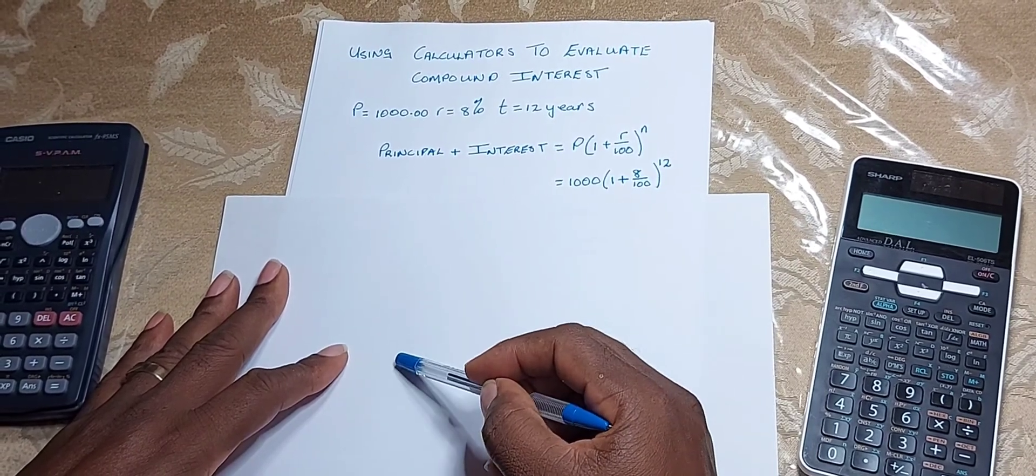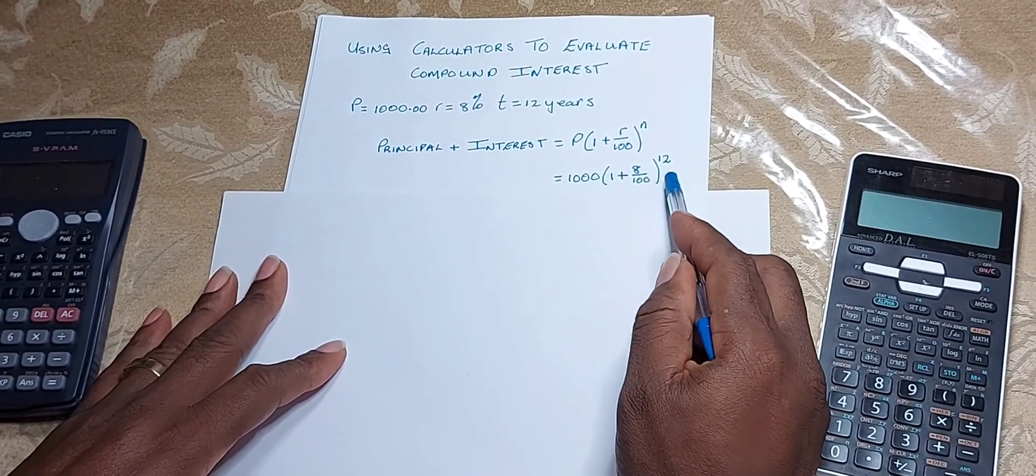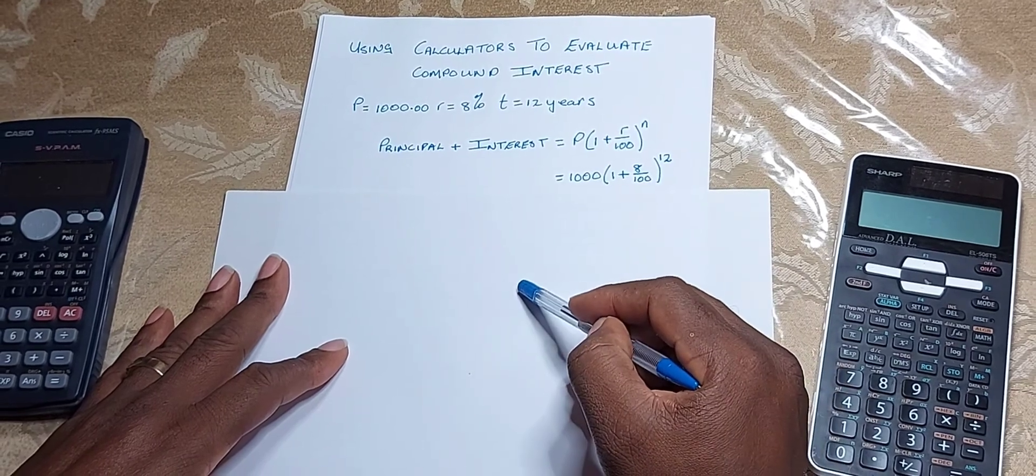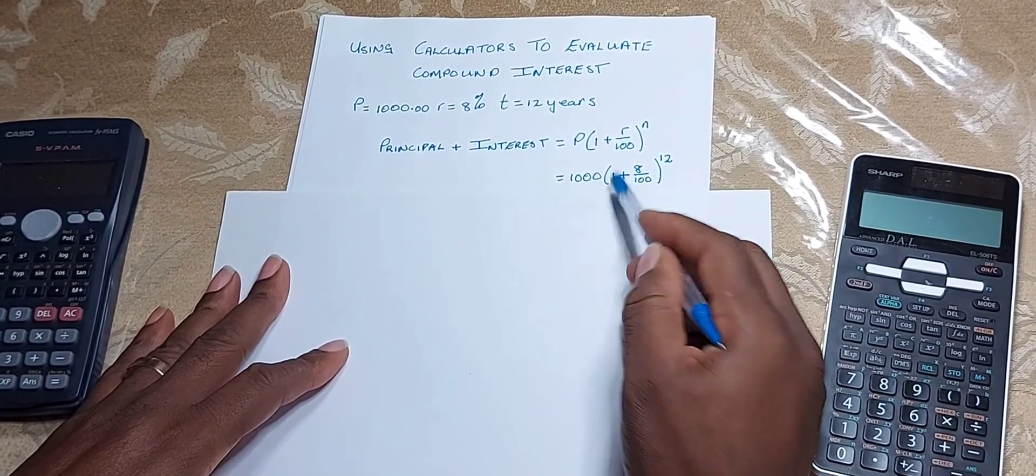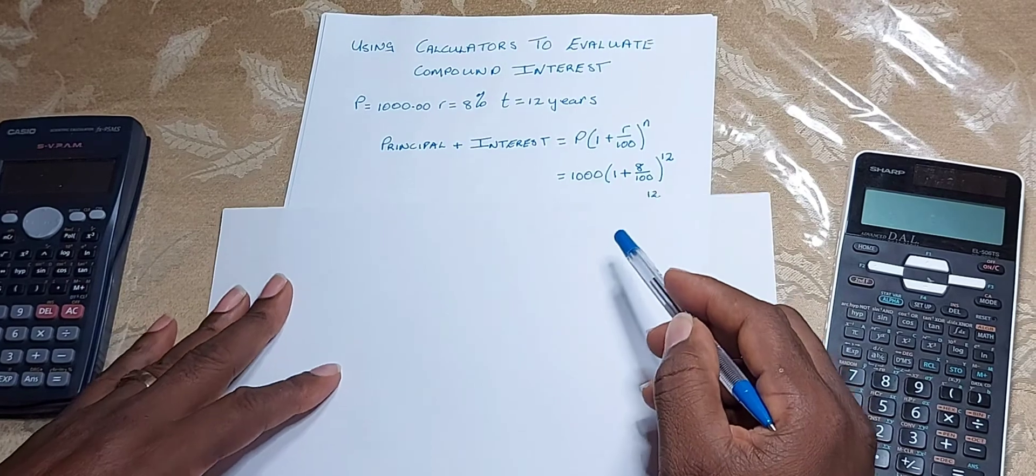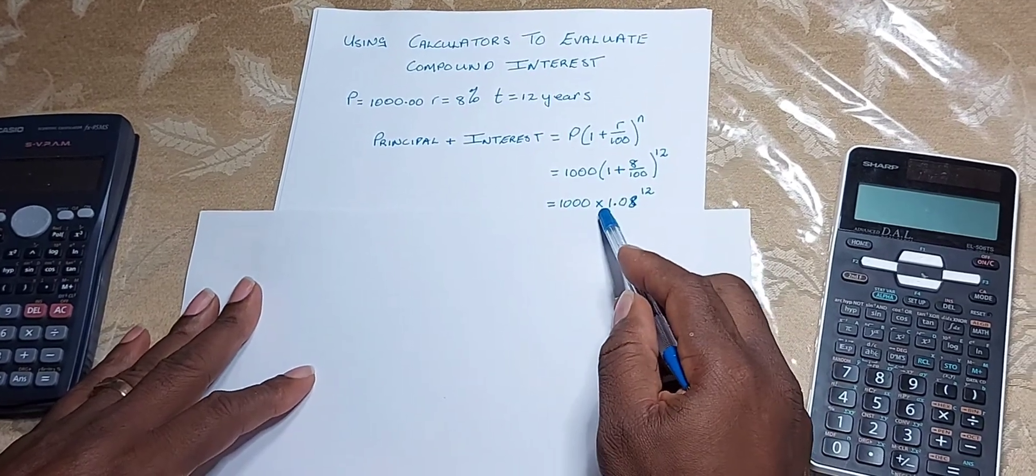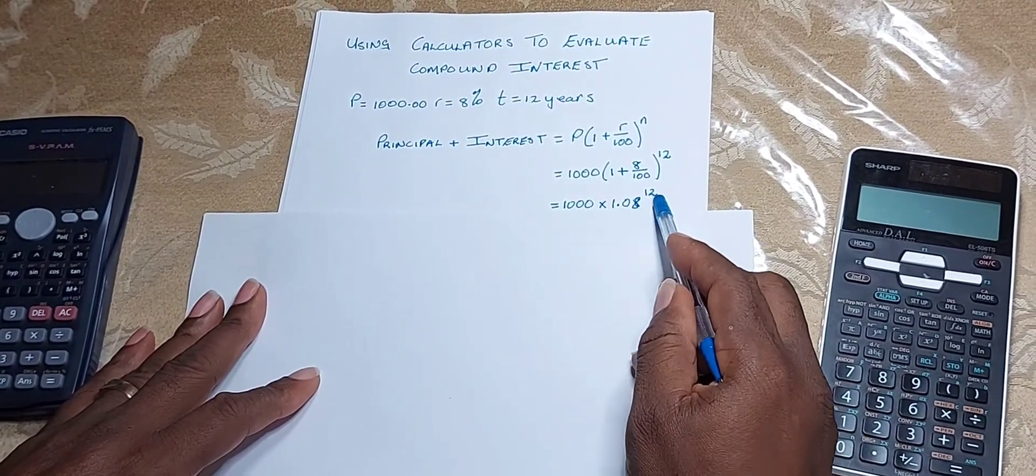First, there is an easy trick. We convert the 8 over 100 to decimals, then we add 1 to it. So this would be equal to 1000 times 1.08 to the power of 12.